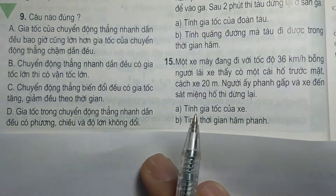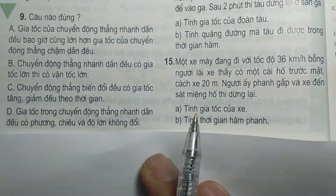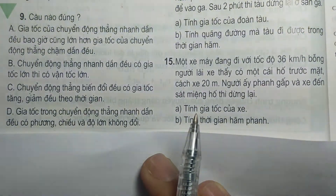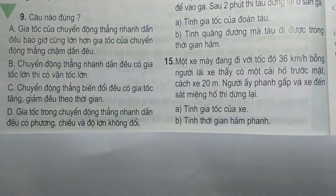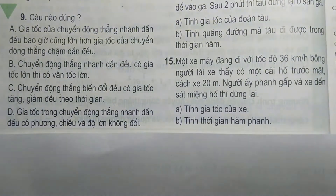Bao gồm 6 công thức: A bằng V trừ V0 trên T; V bằng V0 cộng A nhân T; S bằng V0T cộng 1 phần 2 A nhân T bình; V bình trừ V0 bình bằng 2AS. Các con tự xem lại ở các video trước nhé.